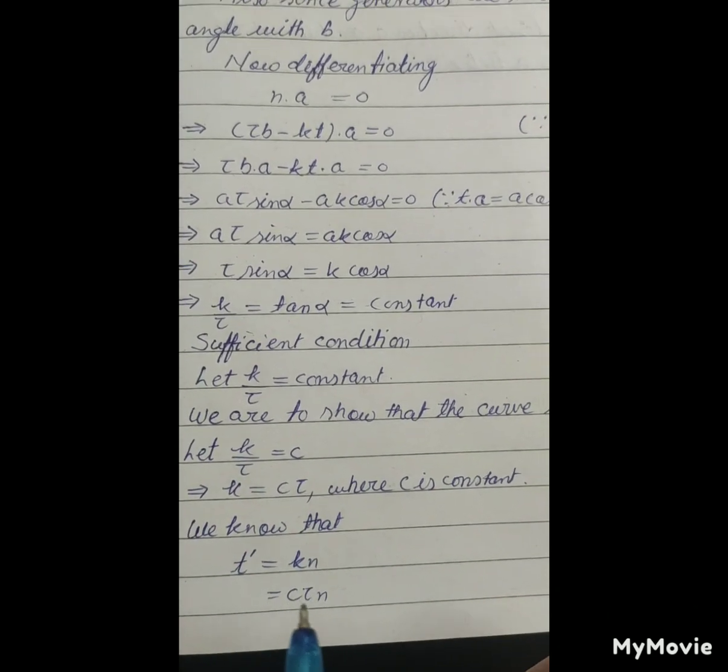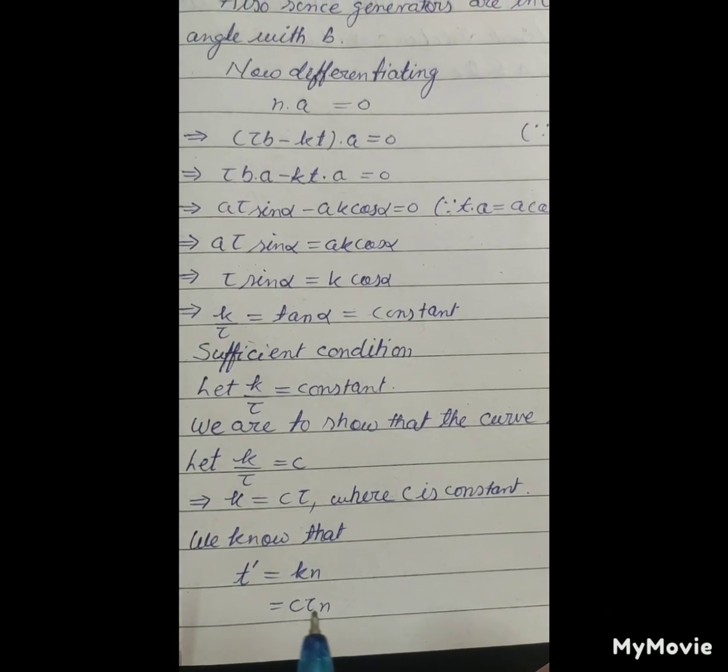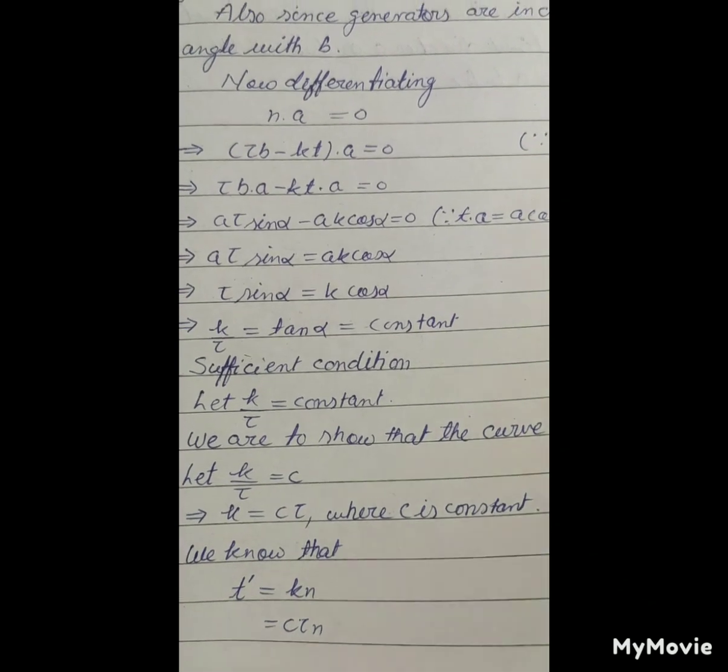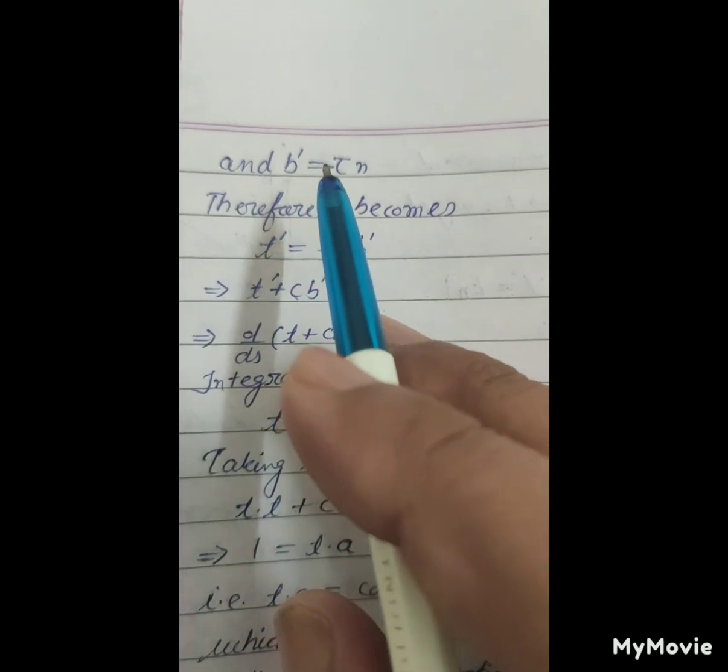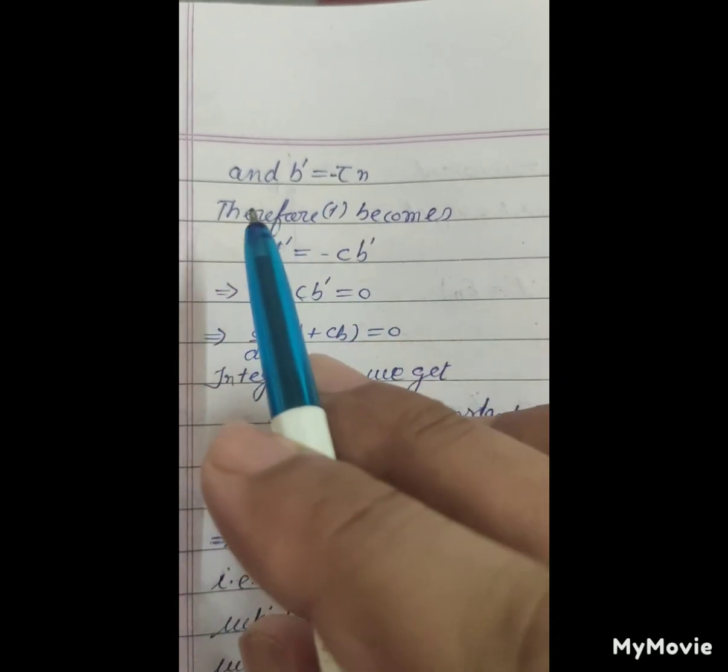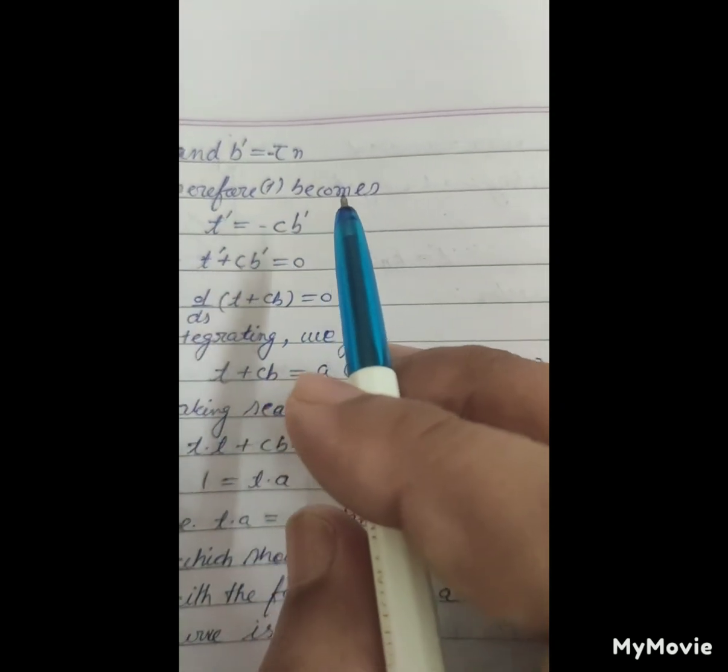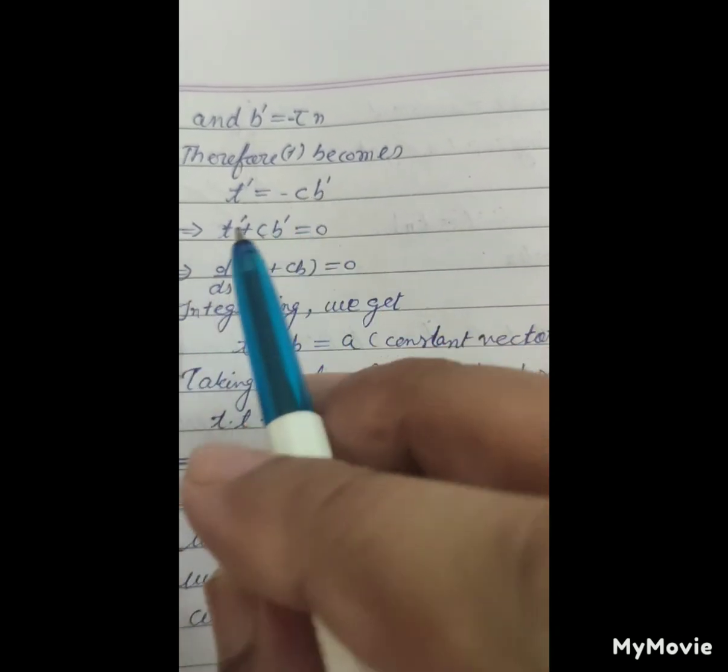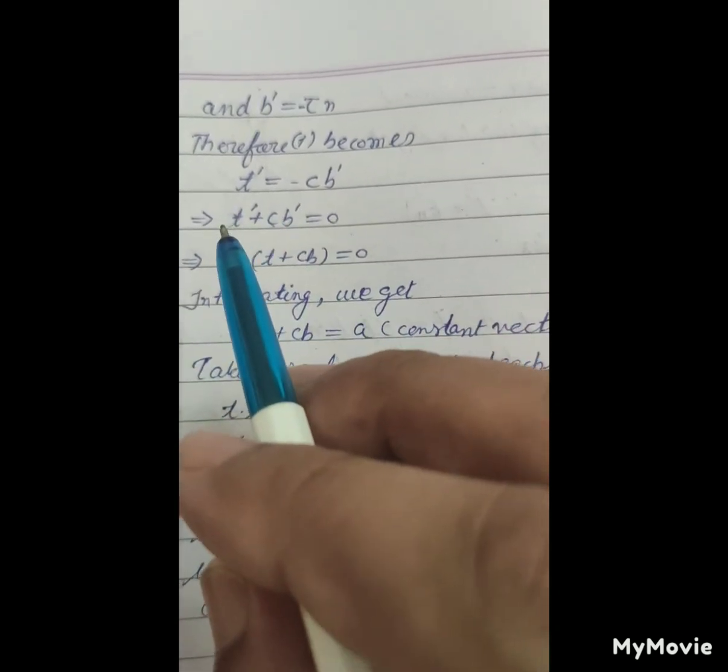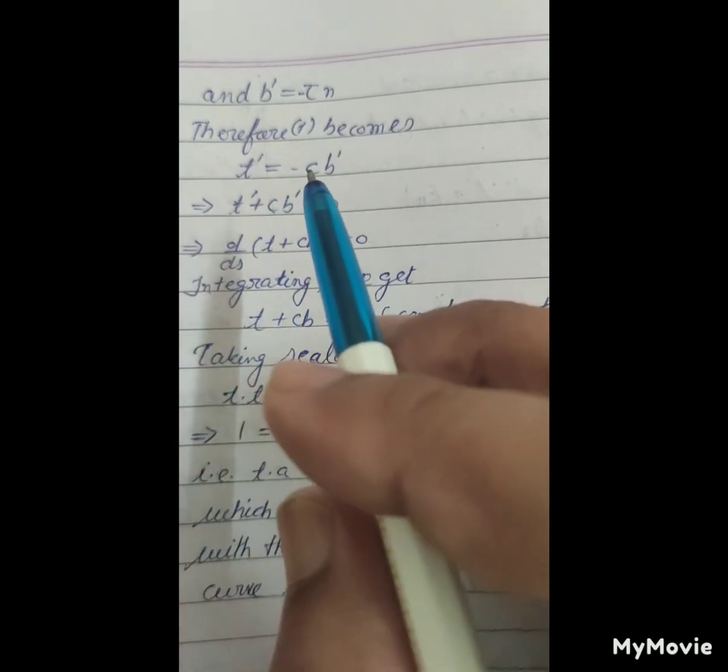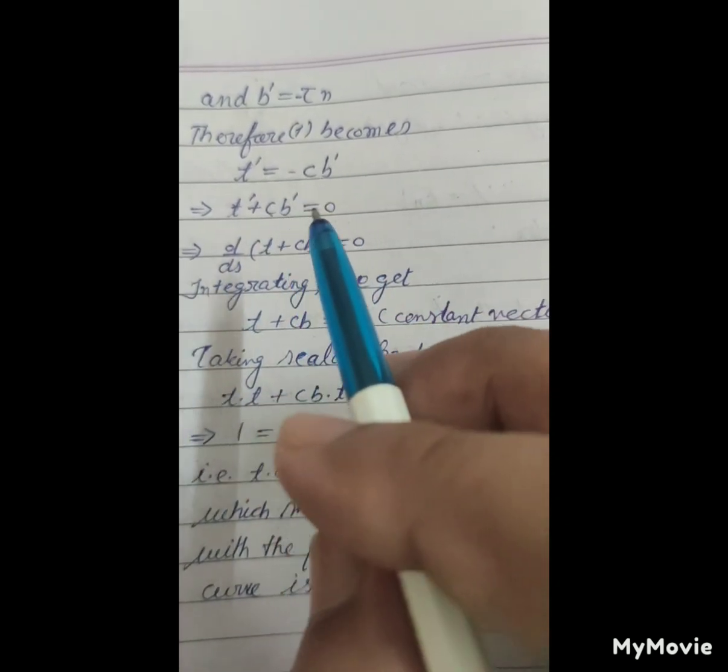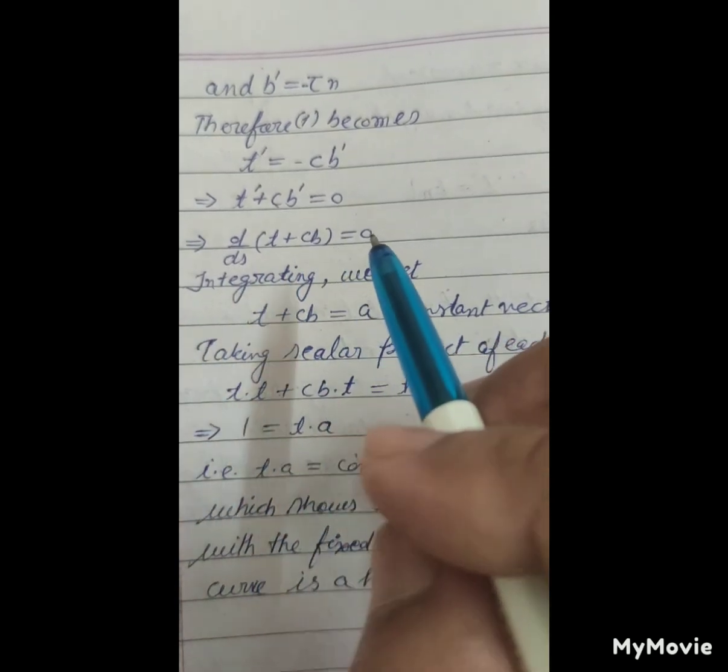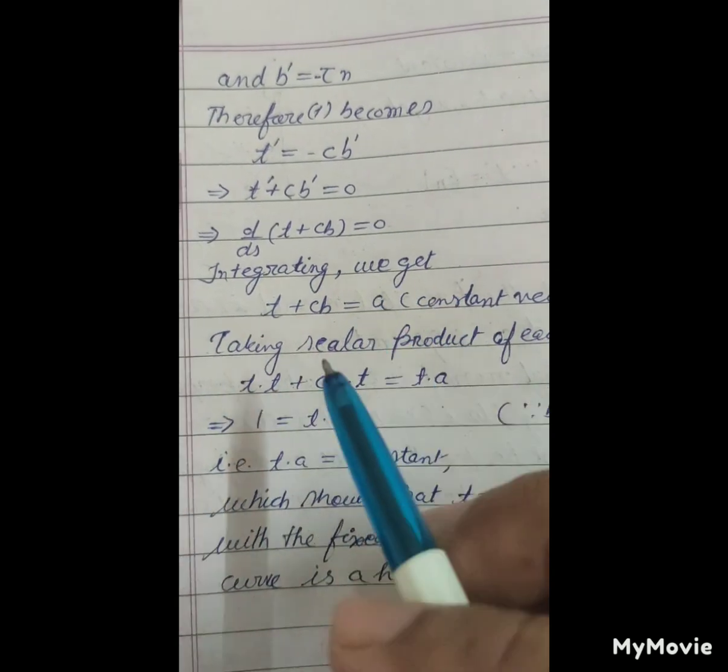We know that t dash equals kn equals cτn, and b dash equals minus τn. Therefore t dash equals minus c b dash, which implies t dash plus c b dash equals 0. Which implies d upon ds of (t plus cb) equals 0.